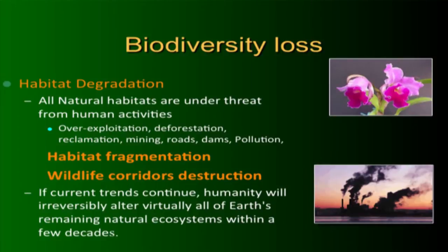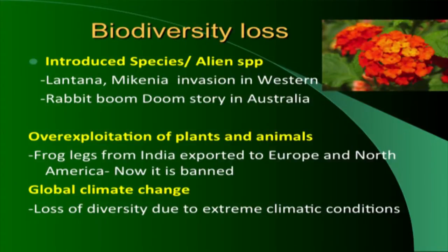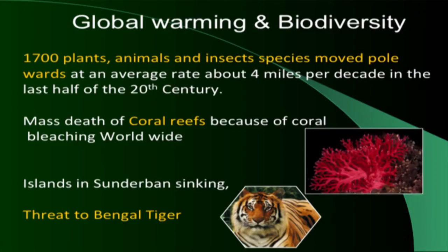Reasons for wildlife decline include over-exploitation, deforestation, mining, pollution, and habitat fragmentation. Wildlife corridors are critical because they are the only way animals can travel between fragmented habitat patches. Conservation of wildlife corridors is very important. Lantana and Mikania are invasive species causing biodiversity loss. Due to global warming, 1,700 species of plants, animals, and insects have already moved towards the poles.